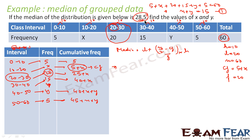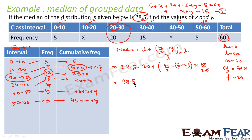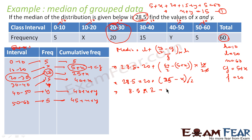Substituting: 28.5 = 20 plus (60/2 minus (5 plus x)) divided by 20, into 10. Simplifying, the 10 and 20 cancel to give one-half, so: 28.5 = 20 plus (30 minus 5 minus x) divided by 2, which gives 28.5 = 20 plus (25 minus x) divided by 2. Solving: 8.5 multiplied by 2 equals 25 minus x, giving 17 = 25 minus x.